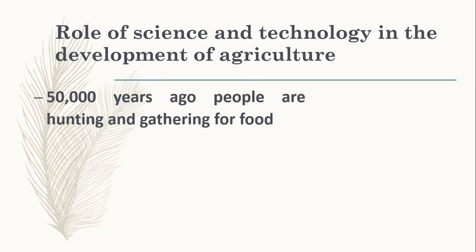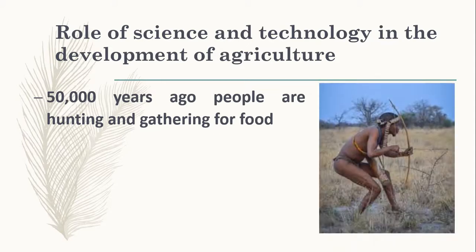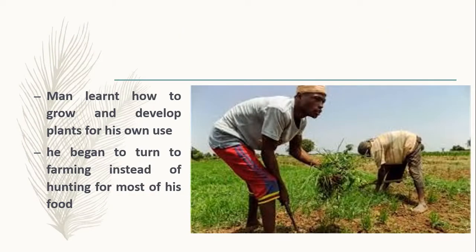Many years ago, people have been hunting and gathering food. But later on, man started to learn how to grow agriculture by his own. He began to turn to farming instead of hunting for most of his food.